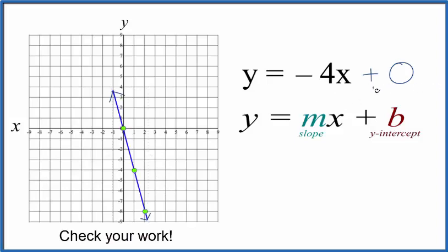I hope you remembered that since we didn't have anything for b, we called it 0. This is the graph we end up with for y equals minus 4x.